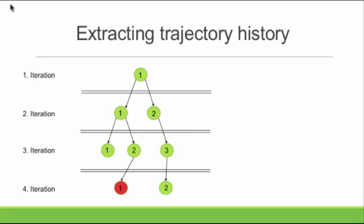The numbering — iteration 1 segment 1, iteration 2 segment 1, segment 2, iteration 3, 1, 2, 3, and so on — these are just arbitrary indexes used for internal bookkeeping in the weighted ensemble simulation. Wtrace does that tracing for you. The only option it really needs is the master H5 file, which contains all the parent-child relationships. It basically just goes in, finds the child, and traces back up as you go up in iterations.